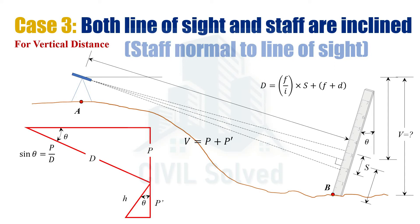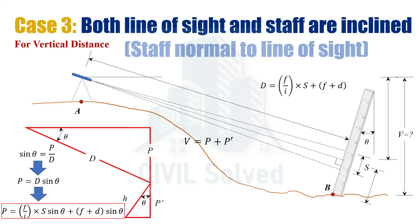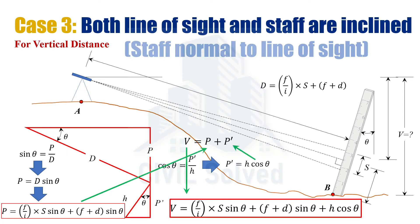P is calculated by considering the larger right angle triangle where P is the perpendicular and D is the hypotenuse. Using sin θ: sin θ = P / D, so P = D sin θ. Substituting the value of D gives the final formula for P. Similarly, P' is calculated from the smaller right angle triangle where P' is the base and X (the central stadia reading) is the hypotenuse. Using cos θ: P' = X cos θ. Putting P and P' together gives the final equation for V.